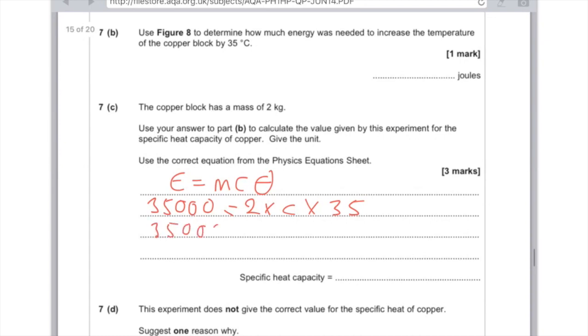Do a bit of maths. Two times 35 is 70C, therefore C equals 35,000 divided by 70 to get an answer of 500. And we need to use the unit, which I just mentioned in the previous question. But this experiment does not give the correct value for the specific heat of copper. One reason why is because energy is lost to the surroundings.